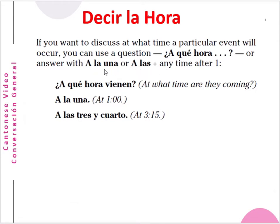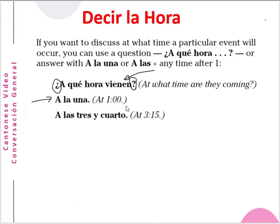A la una is one o'clock only. ¿A qué hora vienes? — at what time are you coming? Vienes means you are coming. Remember to give a question mark at the end of the sentence and also a reverse question mark at the beginning of the sentence — this is the grammar rule in Spanish.